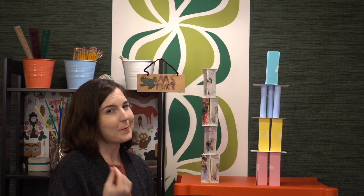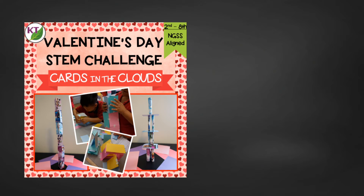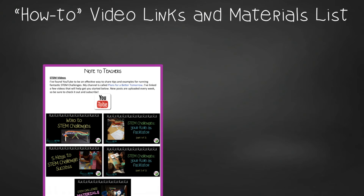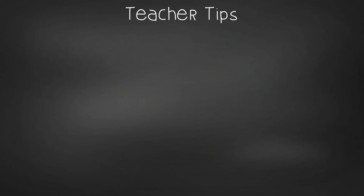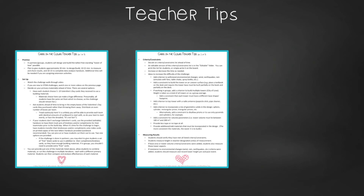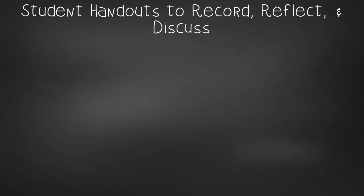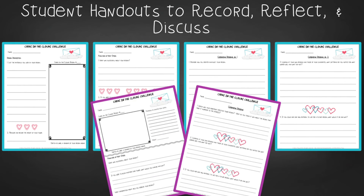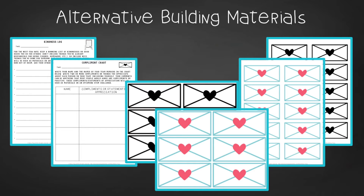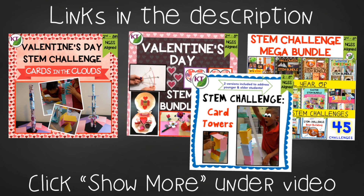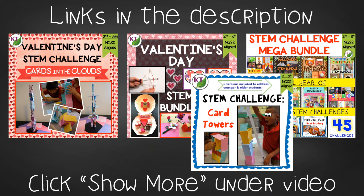This challenge is very straightforward, but check out the resource because it will save you a lot of time and has some extra goodies. It contains everything you need, including modifications for 2nd through 8th graders. You'll get aligned Next Gen Science Standards, links to STEM challenge how-to videos, and the Cards in the Clouds materials list. Teacher tips include premise and setup, how to adjust difficulty through the criteria and constraints list, measuring results, and cross-curricular extension suggestions. There's an editable criteria and constraints list, two versions of student handouts, group discussion questions, alternative building materials for older students, math extension questions, and process flow templates. This resource is available individually and as part of discounted Valentine's, Card Towers, and Mega STEM Challenge bundles. Links are in the description below.